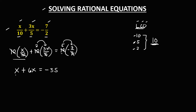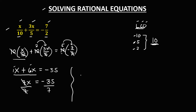Then simplify: x plus 6x — the coefficient of x is 1, so 1 plus 6 equals 7, giving us 7x equals negative 35. To solve for x, divide both sides by 7. Therefore, x equals negative 35 divided by 7, which is negative 5. So this is the solution of this rational equation.